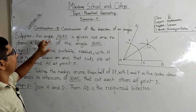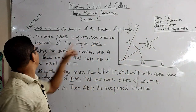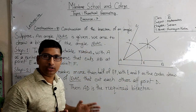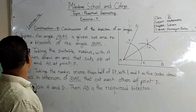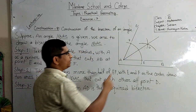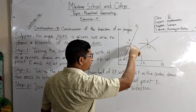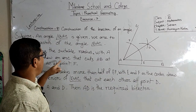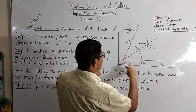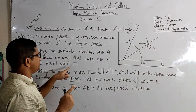Suppose an angle BAC is given. We have to draw a bisector of the angle BAC. Step 1: taking the suitable radius with A as a center, draw an arc that cuts AB at point E and AC at point F.